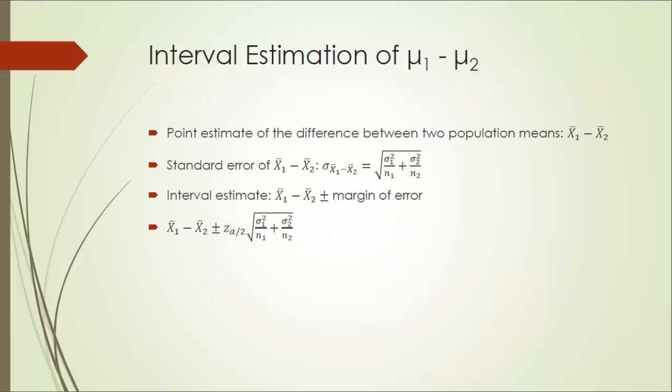Let's look at the interval estimation of the difference of two population means. The point estimate of the difference between two population means will simply be the difference between two sample means. The tricky part is the standard error of x1 bar minus x2 bar, which is given by this formula, square root of variance of population 1 divided by n1 plus variance of population 2 divided by n2.